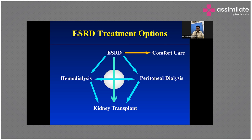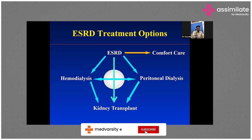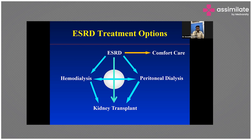For kidney transplantation, kidneys are not available readily — financial support must be present. As shown in the graph, all these options are interchangeable except comfort care. A patient on ESRD can go from hemodialysis to peritoneal dialysis, to transplantation, and back — if graft kidney has problems, the patient can return to hemodialysis or peritoneal dialysis.